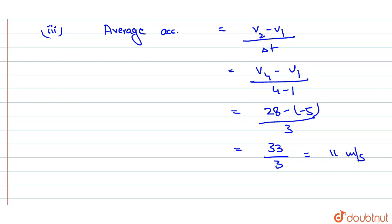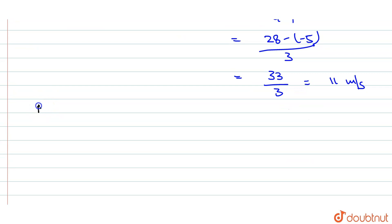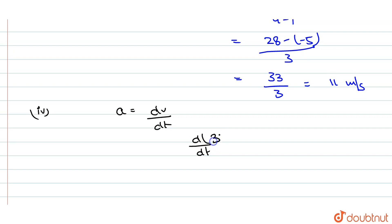Fourth part is instantaneous acceleration. What is the acceleration? dv by dt of the function 3t square minus 4t minus 4. What is the acceleration? 6t minus 4.